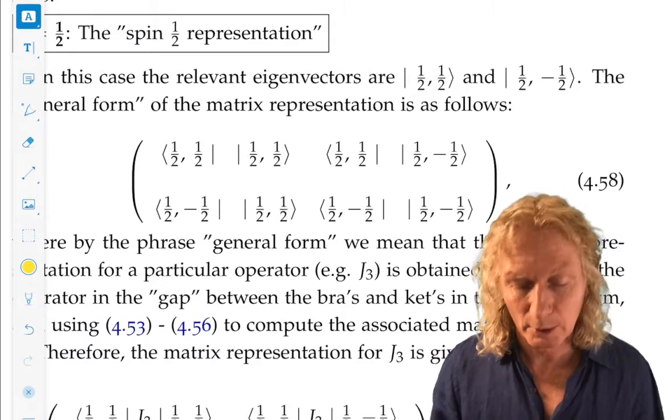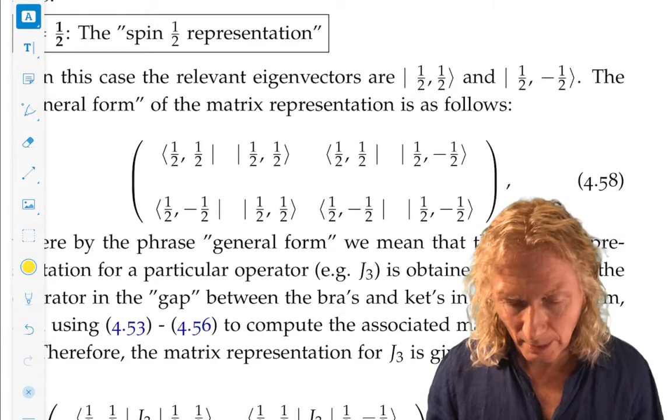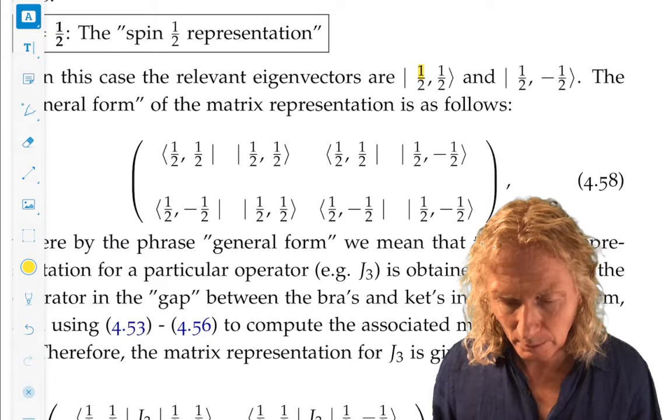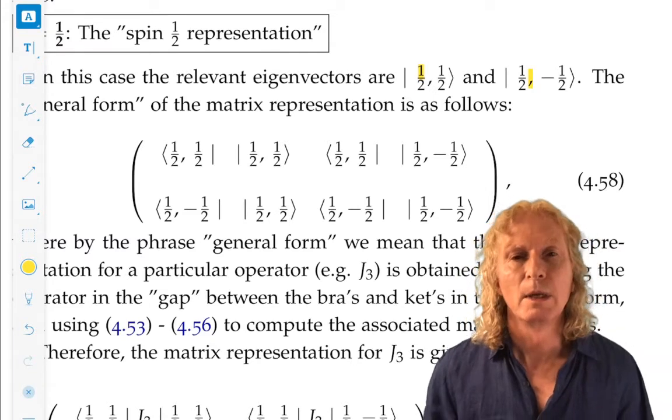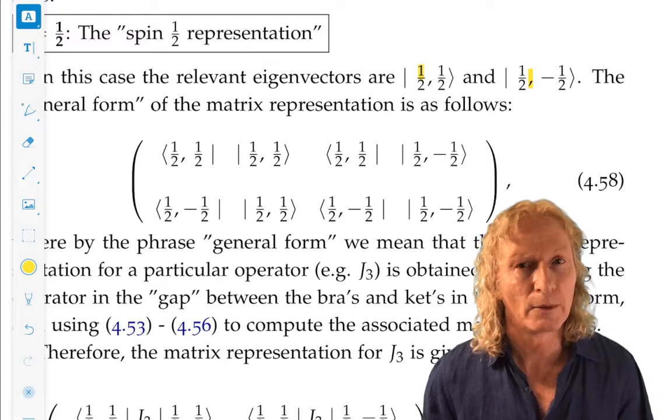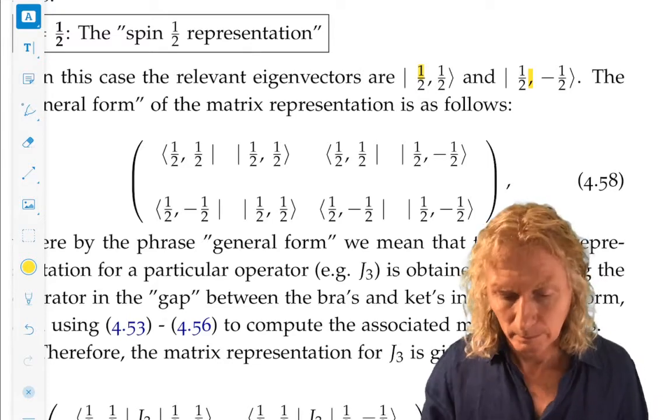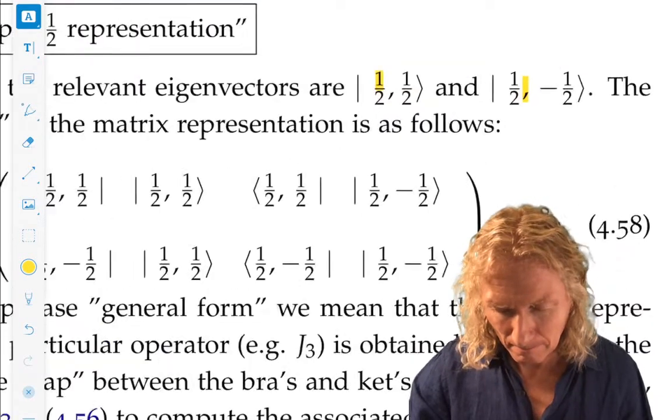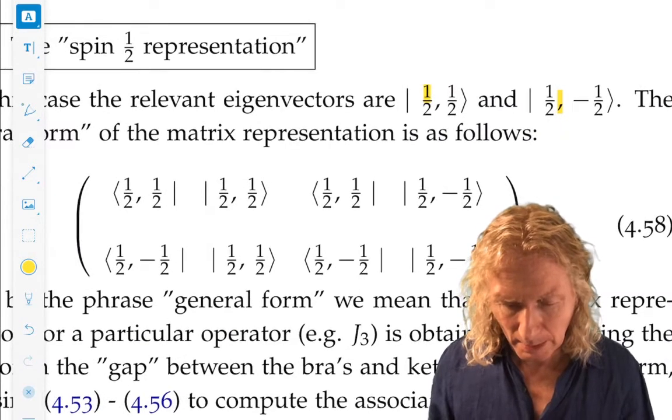Okay, so here's the basis. It's two-dimensional, j is a half, that goes in first, and then m goes from minus a half to a half.